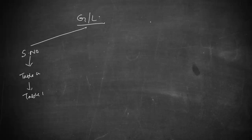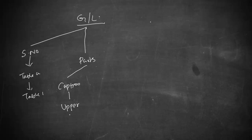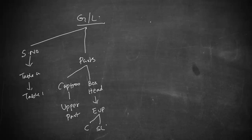Number two, the table should have certain parts. Number one, the table should have what is known as a caption — the upper part of the table. Number two, the table should have what is known as a box head, which is the entire upper part of the table containing columns, subcolumns, and units of measurement with captions.